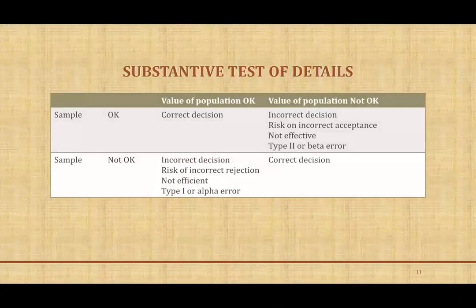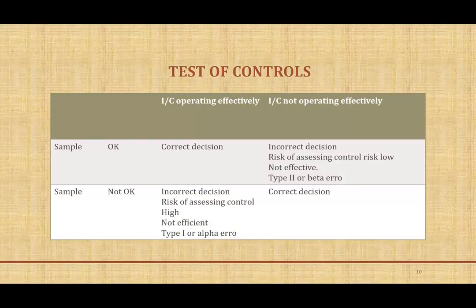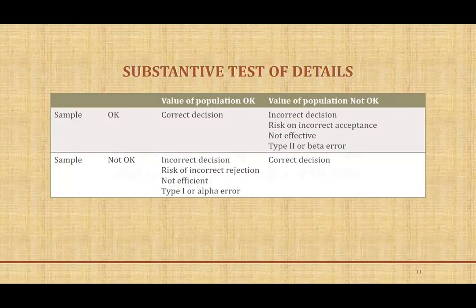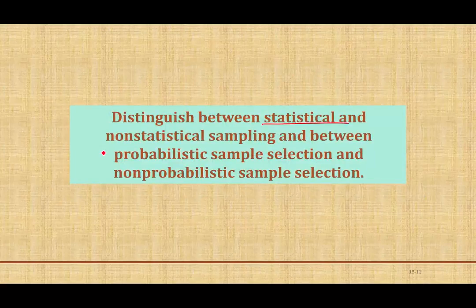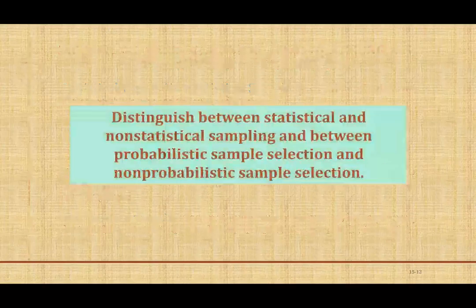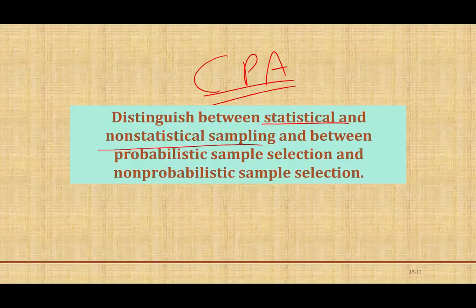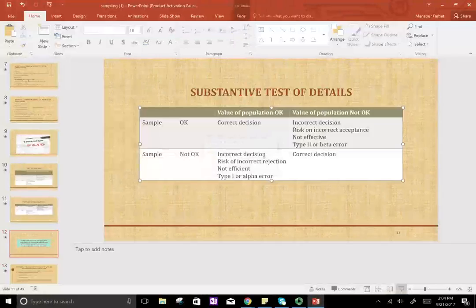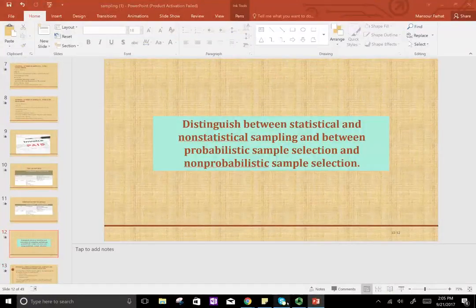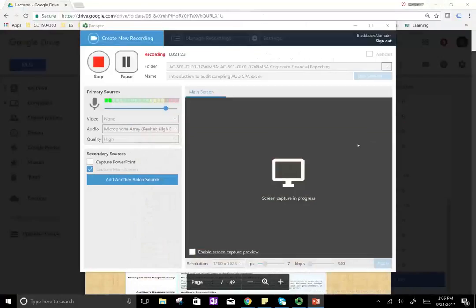Hopefully this gives you an idea of how sampling, non-sampling, type one, and type two errors work. The next thing we're going to look at is distinguishing between statistical and non-statistical sampling, and between probabilistic and non-probabilistic sampling. If you're studying for your CPA exam, make sure you study hard. If you have any questions, email me and good luck. I'll see you next time.